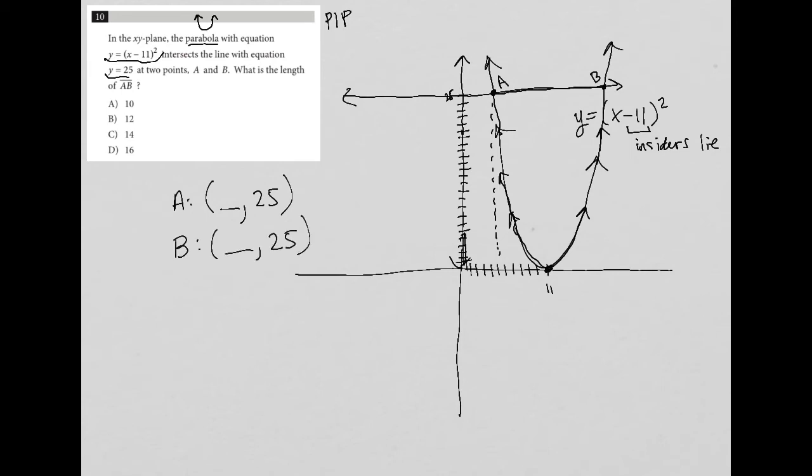Now, why is that important? That's important because I know that when they intersect, that means that point A is also a part of, point A and B, the ordered pairs for point A and B should be something that I can find from the parabola equation, which means if I know that Y is 25, I can replace Y with 25 and rewrite my parabola equation and solve for X from there. So to solve this,